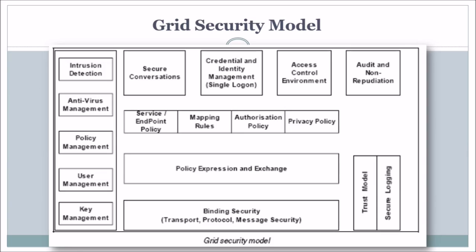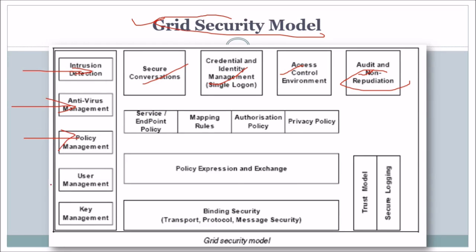This is the grid security model. Because you are transferring your data or information to certain systems doing your computation over the internet or network, you require grid security. The model includes secure conversation, credential and identity management, access control environment, audit and non-repudiation. There also has to be intrusion detection, antivirus management, policy management, user management, and key management.